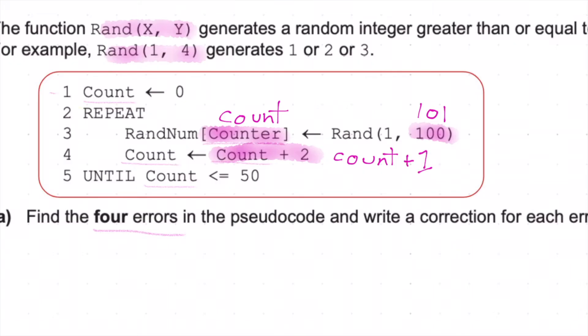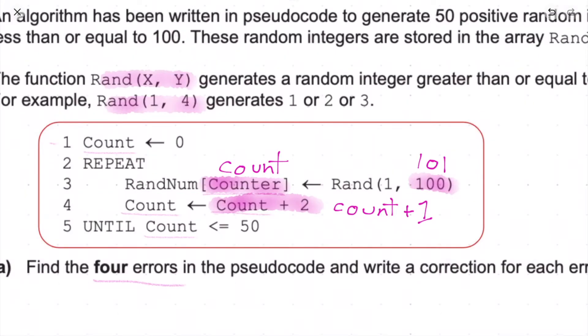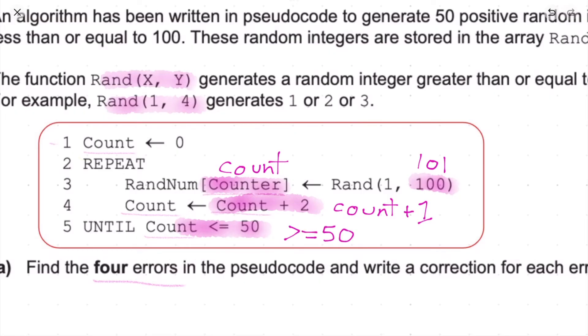And then finally, until count is less than or equal to 50. Well, we want it to do 50 positive numbers. If we have a little think about this, it must be count either is greater than or equal to 50, or it could be simply just until count equals 50. So there are four errors.